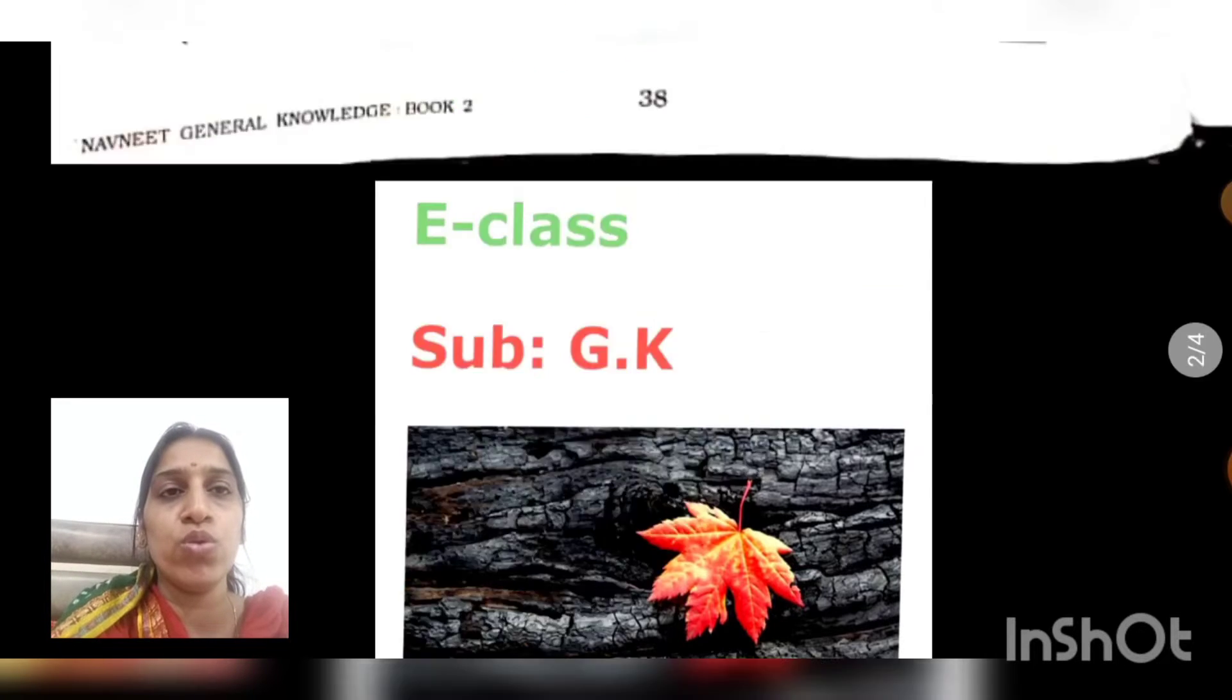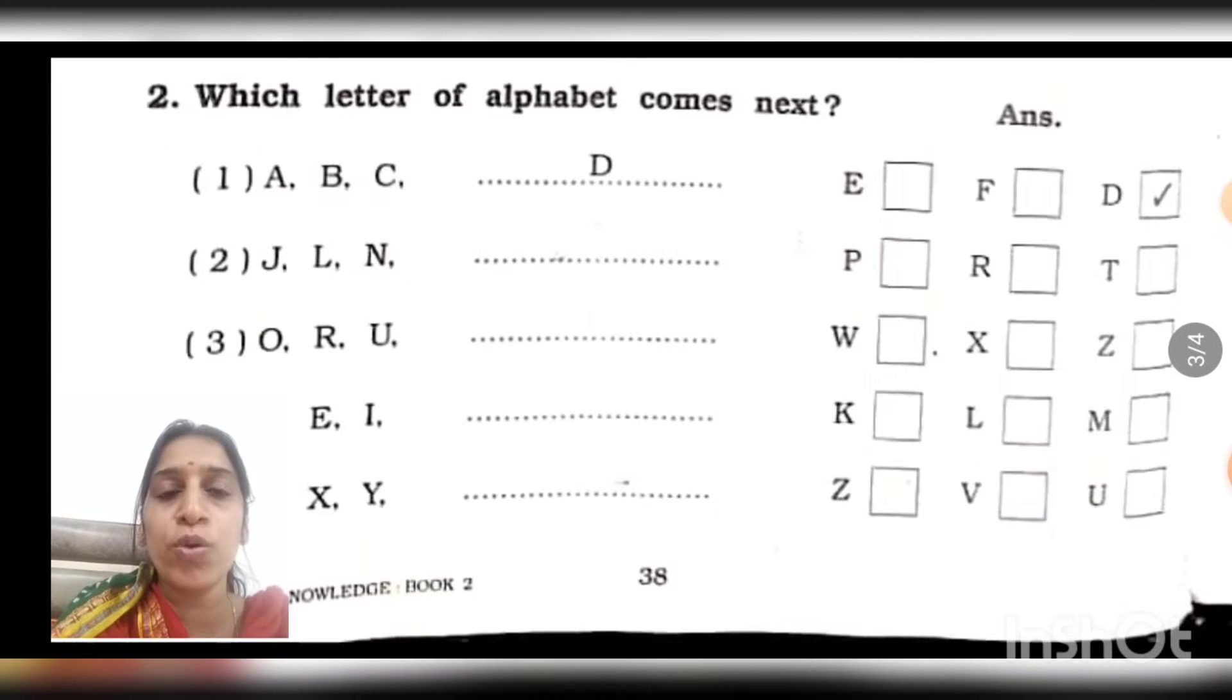Now we will do question number 2. I hope you have completed question number 1 in your textbook. Focus on question number 2. It is very easy. Question number 2 says, which letter of alphabet comes next? We have to guess which alphabet is going to come next. Number 1 is done for you.